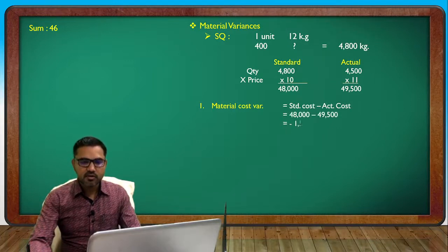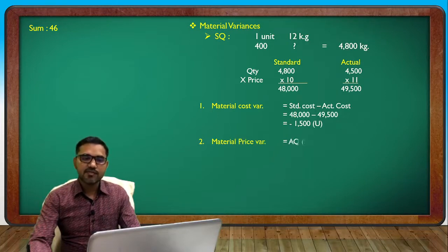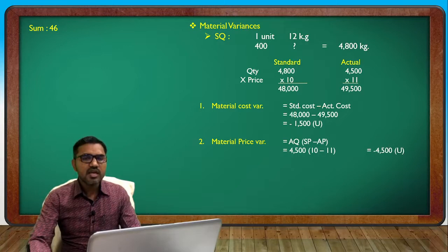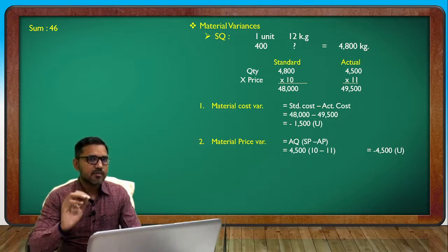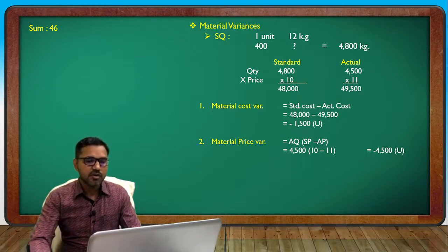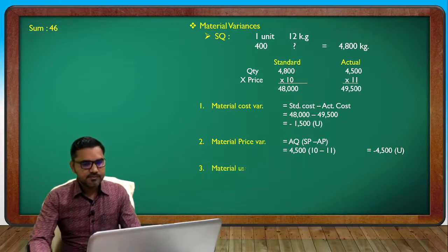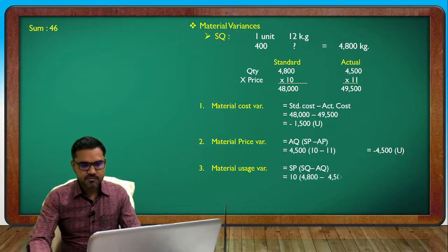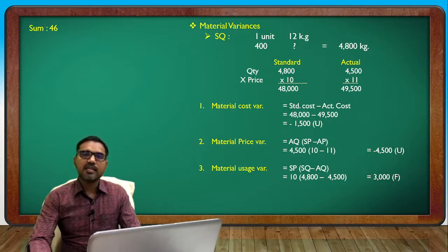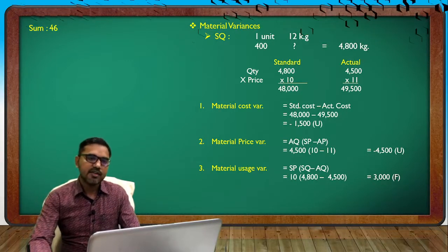Apply the formula: material cost variance = standard cost minus actual cost = minus 1,500 (unfavorable). Material price variance: standard quantity 4,800 minus actual quantity 4,500 = minus 1,500. That is clear — material variances done.